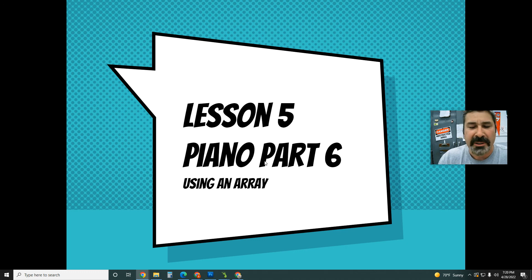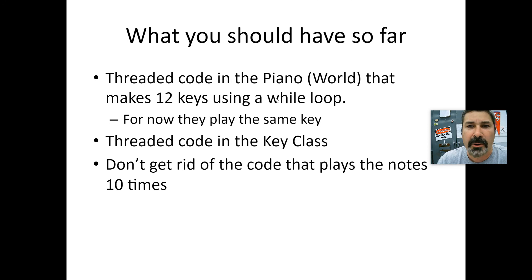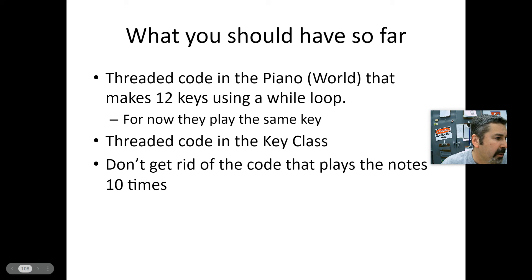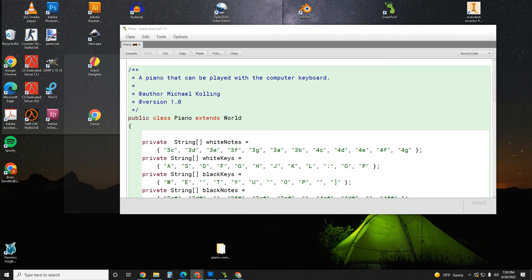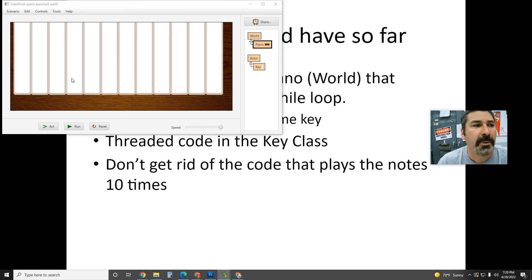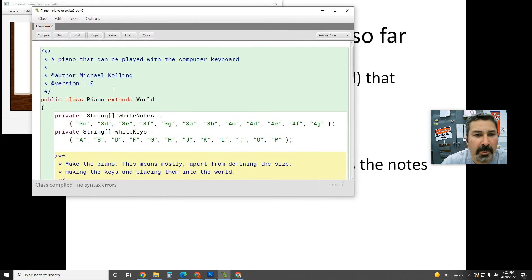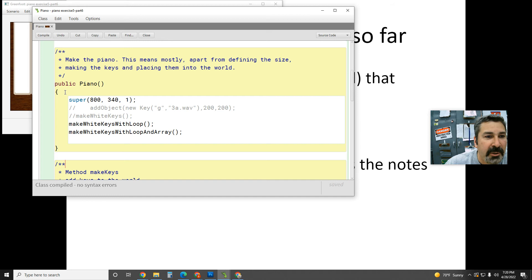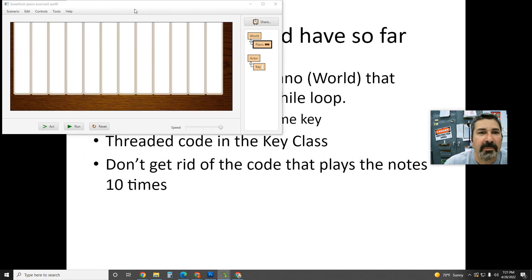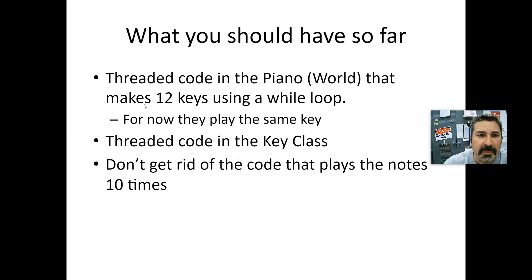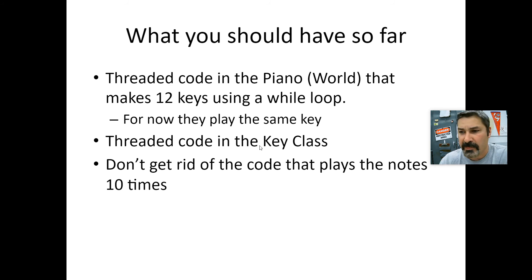Hi everybody, we're going to do Lesson 5, Piano Part 6, using an array. Here's what you should have so far: threaded code in the piano world. In the piano world, threaded code means your constructor is going to look like a series of act method calls. It makes 12 keys using a while loop, but for now they all play the same key.